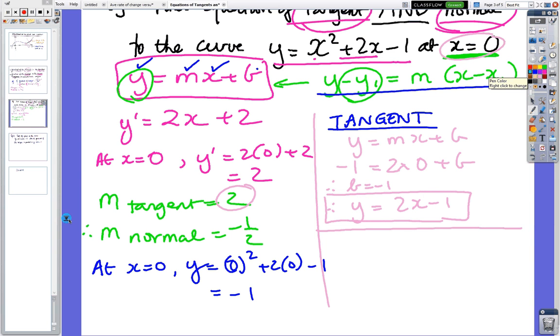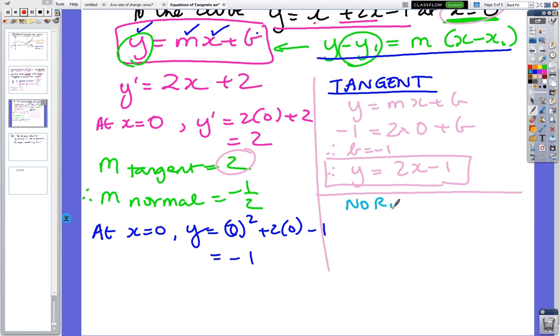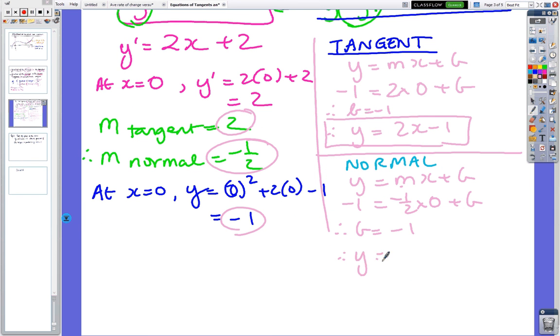So we've done the tangent question. Now we're going to do the normal. So we're going to do the normal question now. So we've got y equals mx plus b. y is still minus 1. But y equals 1 plus b. So b equals minus 1 again. So this time, the answer is y equals minus a half x minus 1. Now it turned out, they look similar, but it's only because the x value was 0. If x had been any other number but 0, then you wouldn't have the same value.